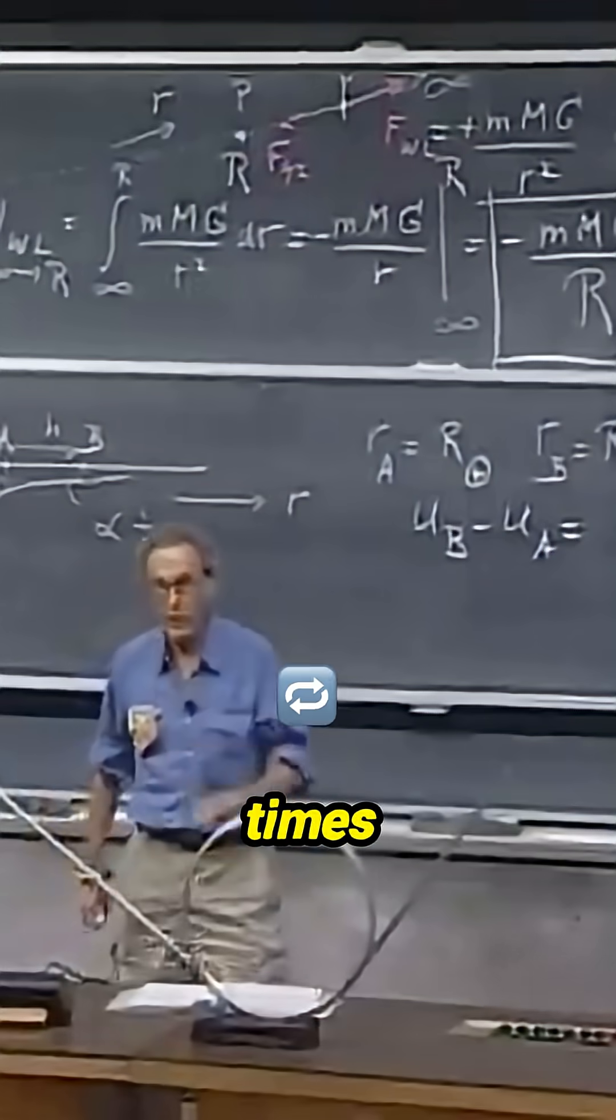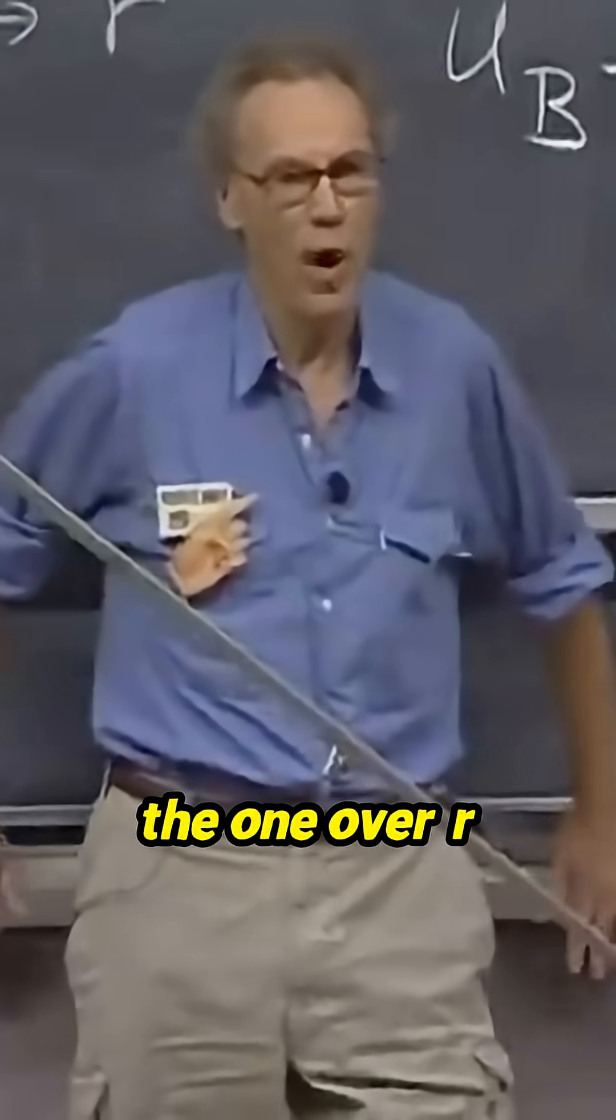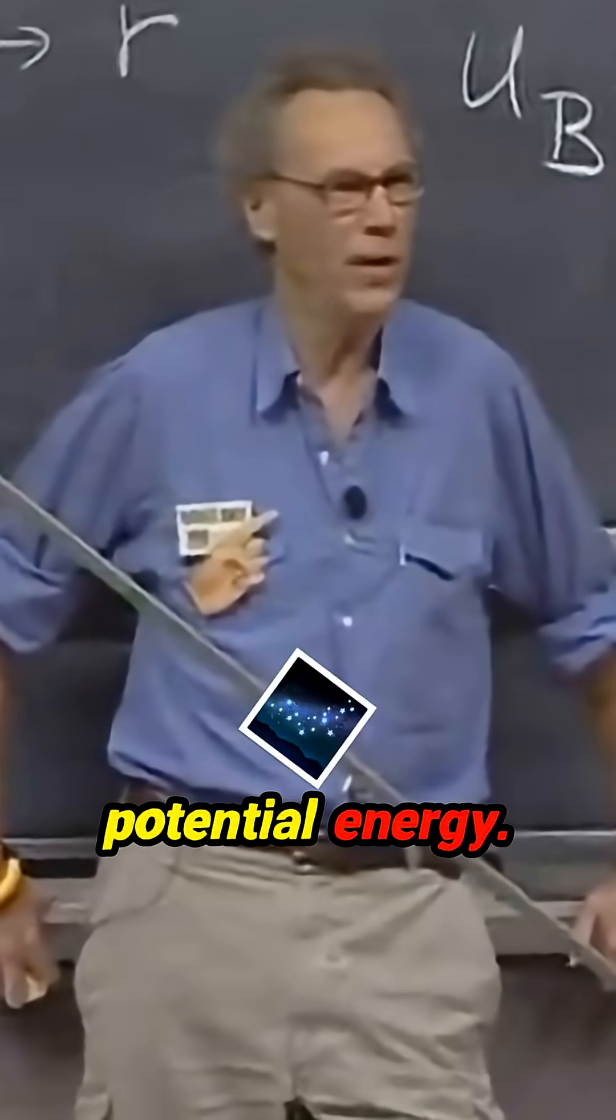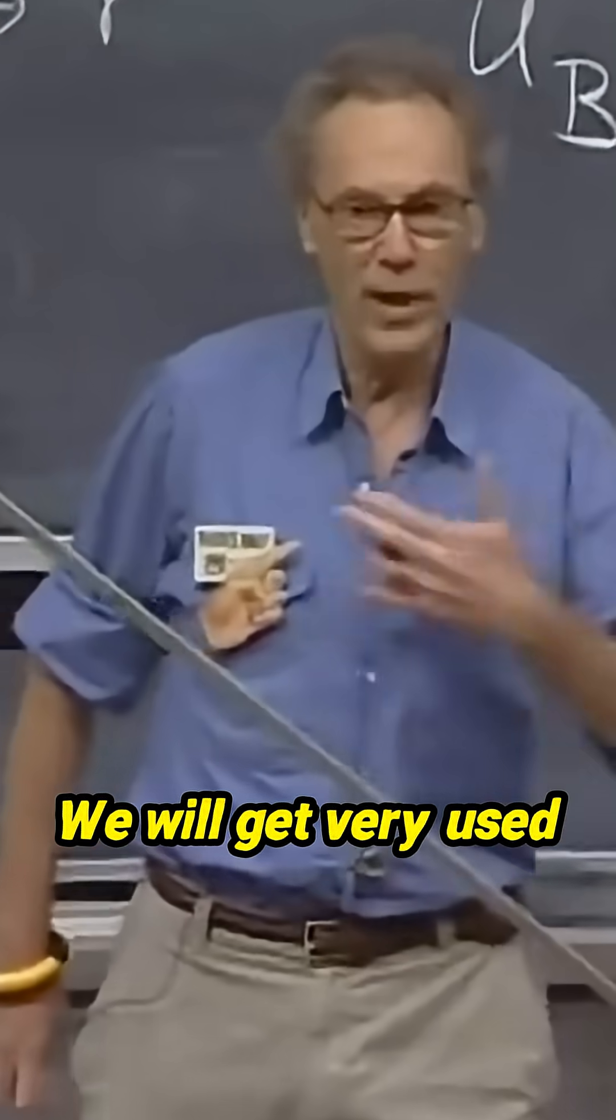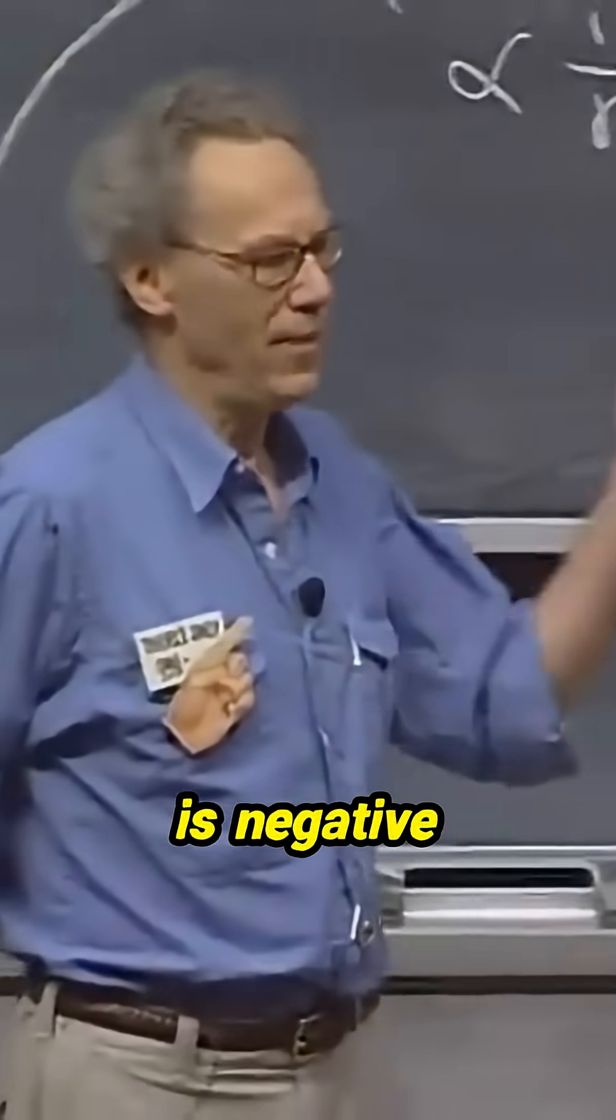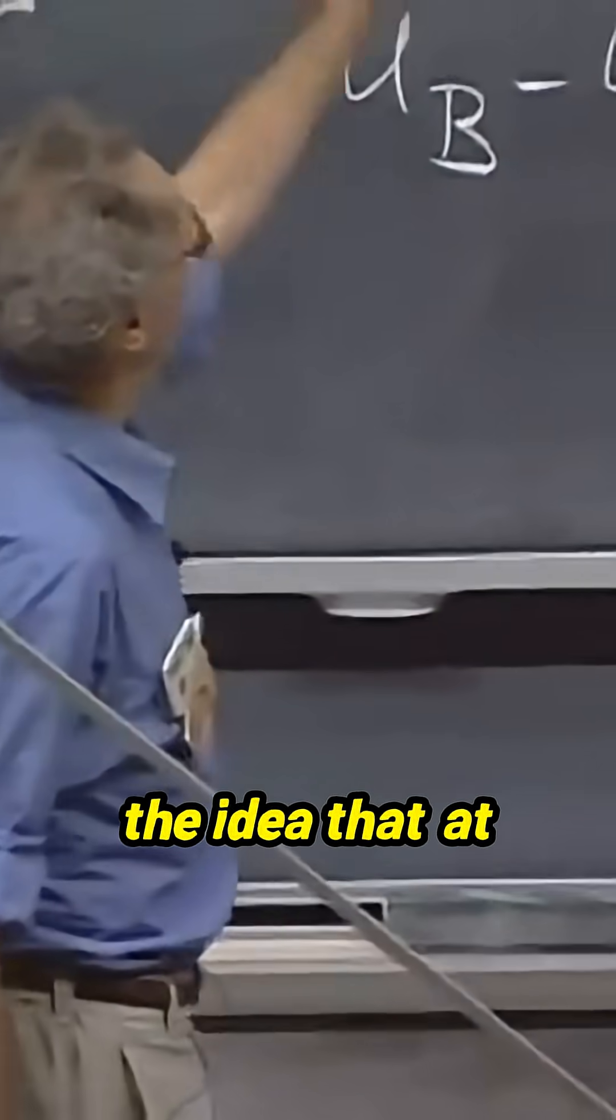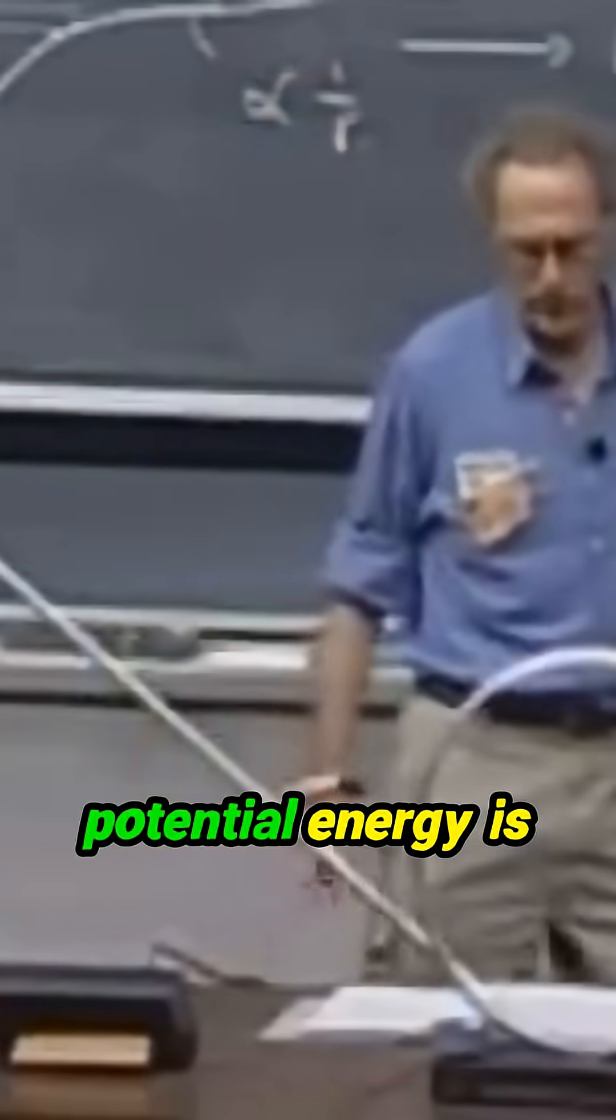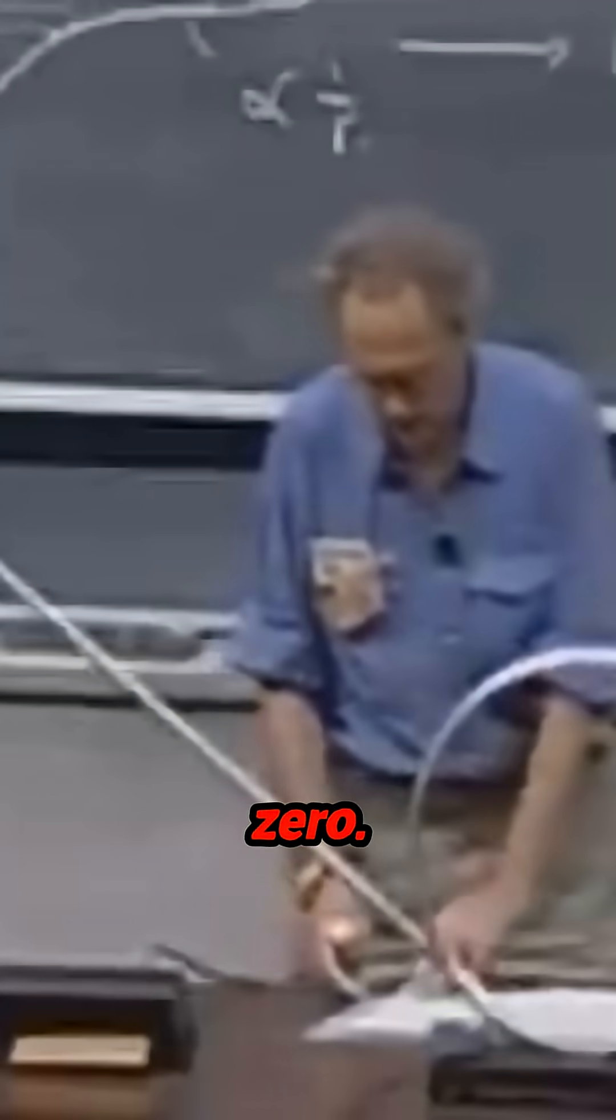We will many, many times in the future use the one over r relationship for gravitational potential energy. We will get very used to the idea that gravitational potential energy is negative everywhere, the way it's defined. And we will get used to the idea that at infinity, the gravitational potential energy is zero.